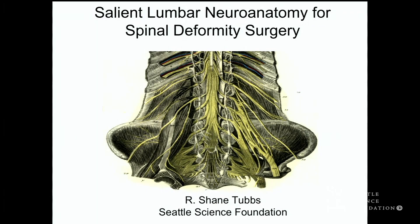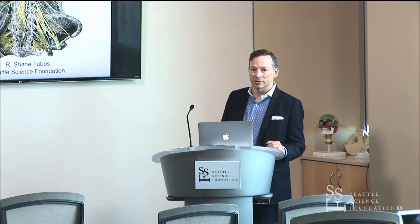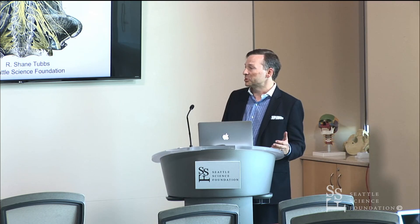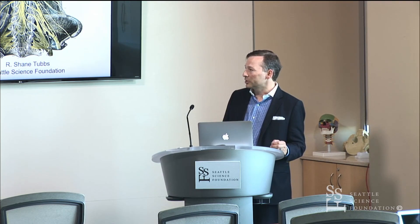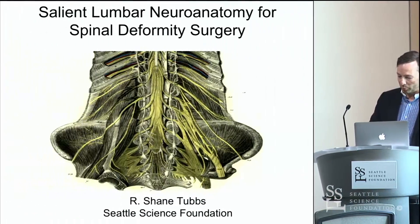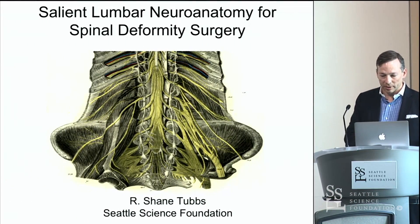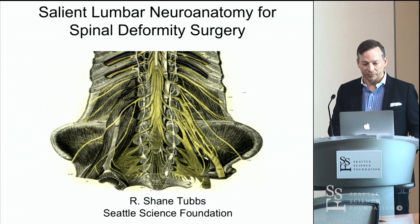A lot of these nerves people forget about and think they're far away from where they are. But with some of the newer procedures — lateral approaches, transpsoas approaches — the importance of the branches in the posterior abdominal wall, specifically lumbar plexus branches, is becoming more important to the spine surgeon.